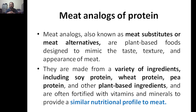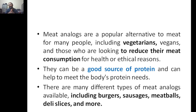The second example is meat analogues. Meat analogues — also known as meat substitutes or meat alternatives — are not extracted from chicken or beef; they are extracted from plants only. These are plant-based foods designed to mimic the taste, texture, and appearance of meat. They are made from a variety of ingredients including soy protein, wheat protein, and pea protein, along with other plant-based ingredients, and are often fortified with vitamins and minerals to provide a nutritional profile similar to meat.